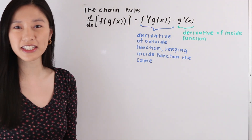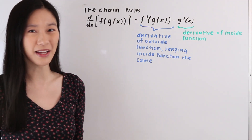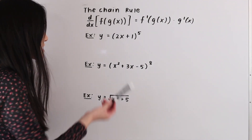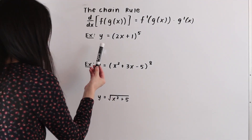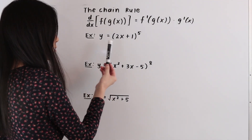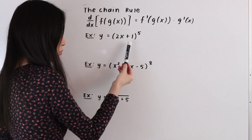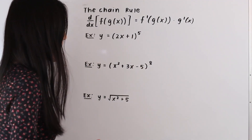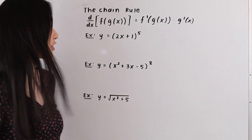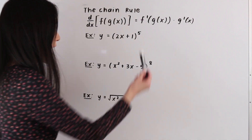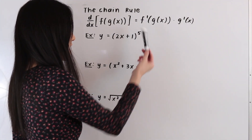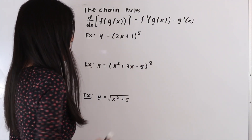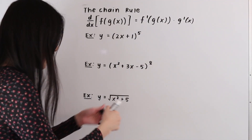Let's go ahead and take a look at some examples and apply this. In this first example we have the function y is equal to the quantity 2x plus 1 to the fifth power. Here we have a composite function — the outer function is the power of 5 and the inner function is 2x plus 1 — so we need to use the chain rule.